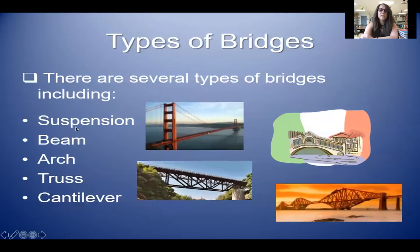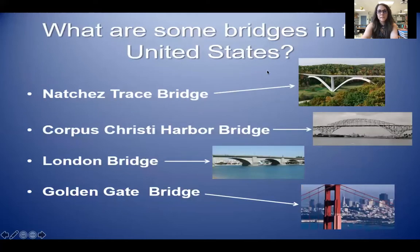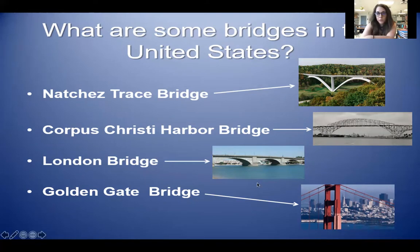Here are some different types of bridges. A suspension bridge — this is a really famous one in San Francisco, California. You may have seen it if you watch Full House or Fuller House, it's at the beginning. There's a beam bridge, an arch bridge, a truss bridge, and a cantilever bridge. Here are some famous bridges: the Natchez Trace Bridge in Louisiana, the Corpus Christi Harbor Bridge in Corpus Christi going over the water, the London Bridge in London, England, and the Golden Gate Bridge, that really famous suspension bridge in San Francisco.